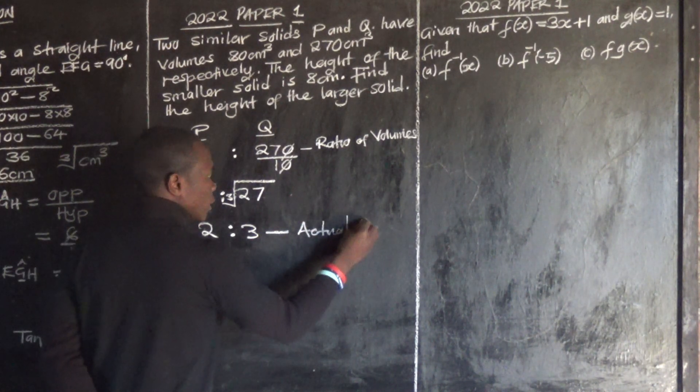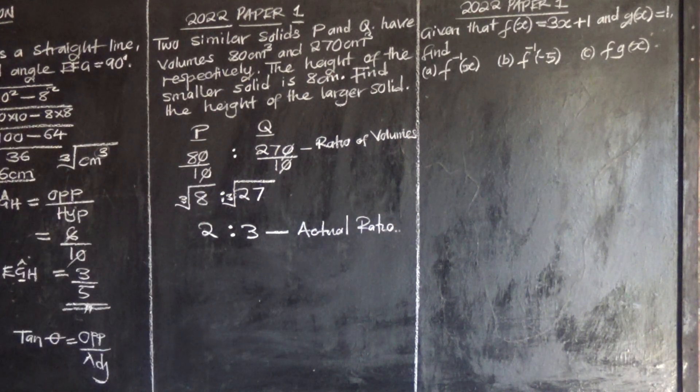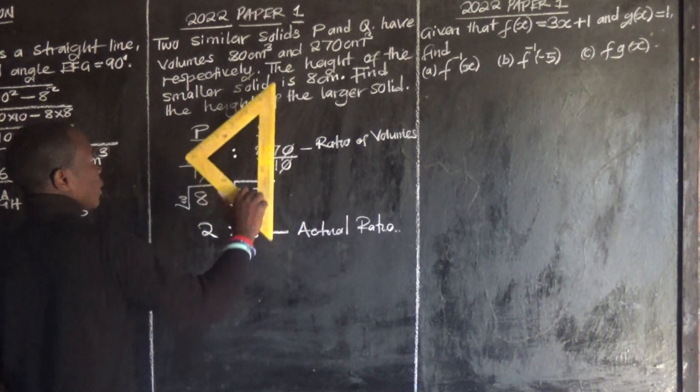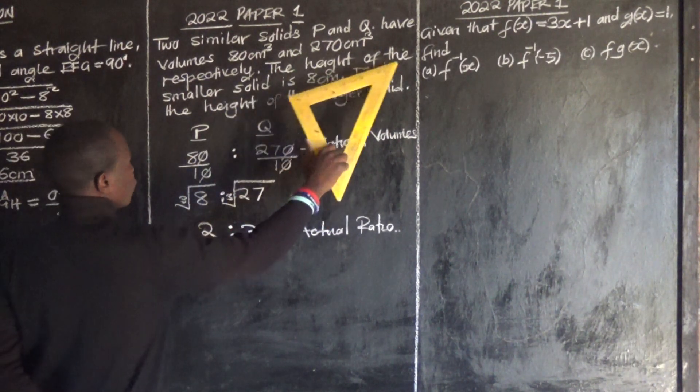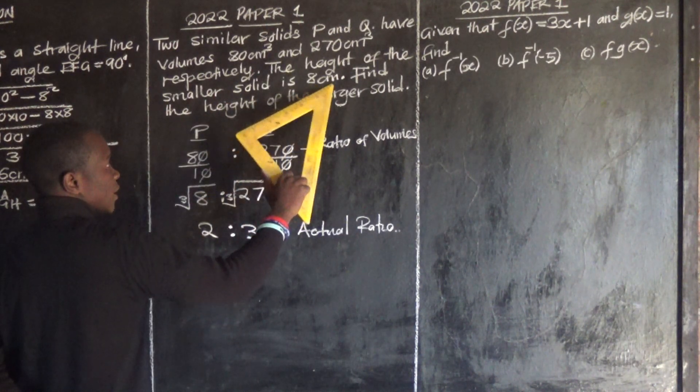Let's look at the question. The height of the smaller solid is 8 centimeters. Find the height of the larger solid.